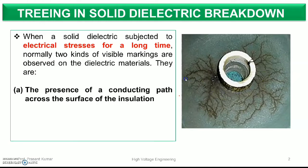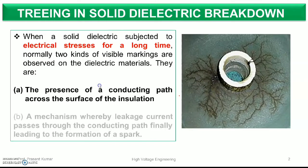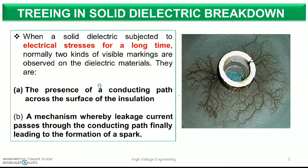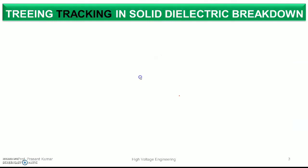There are several regions involved. The presence of a conducting path across the surface of insulation, and the mechanism whereby leakage current passes through the conducting path finally leading to the formation of a spark — this phenomenon is called treeing. A tree-like shape is formed, which represents the sparking and breakdown shape, and this is how we define treeing in solid dielectric materials.